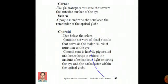Cornea is the tough and transparent tissue that covers the outer surface of the eye. Sclera mainly provides safety to the human eye.